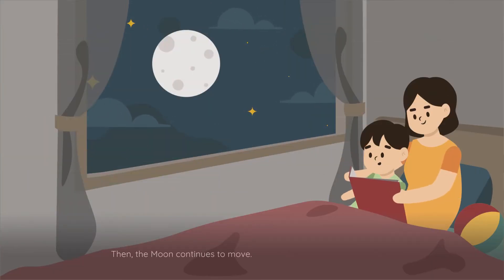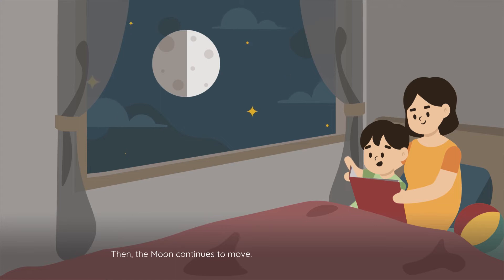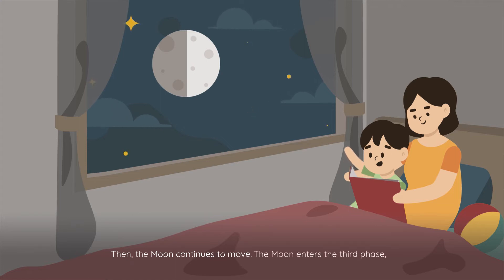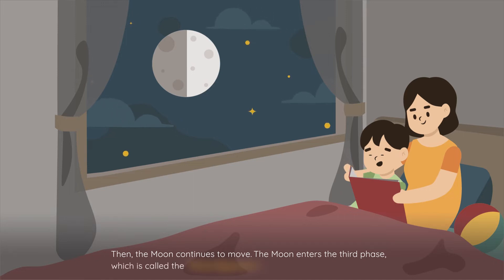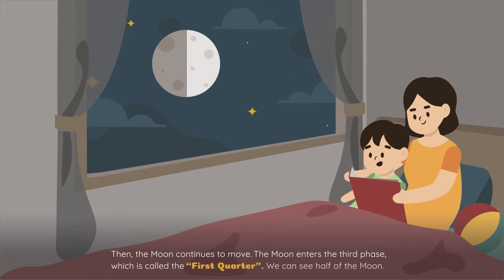Then the moon continues to move. The moon enters the third phase, which is called the first quarter. In this phase, we can see half of the moon.